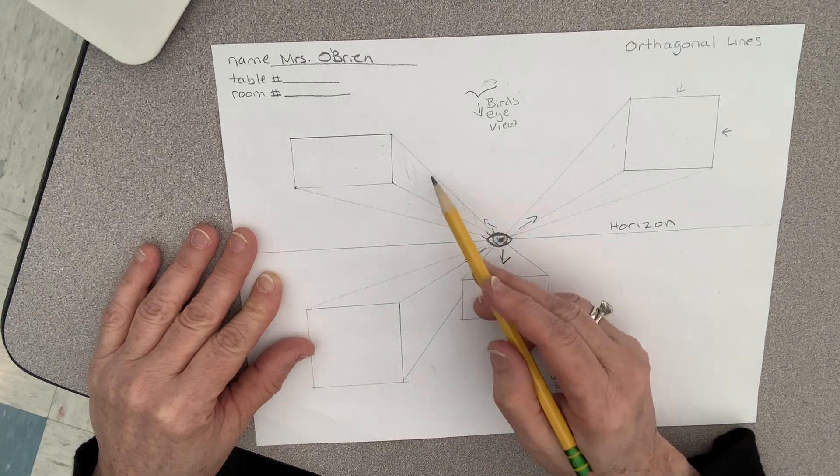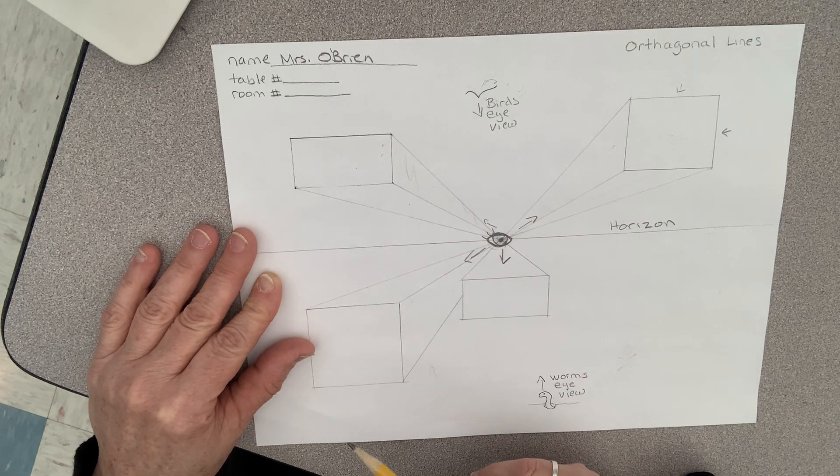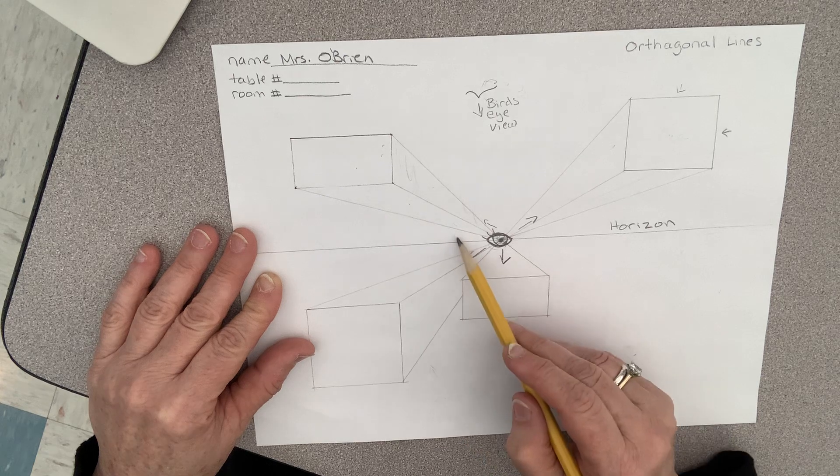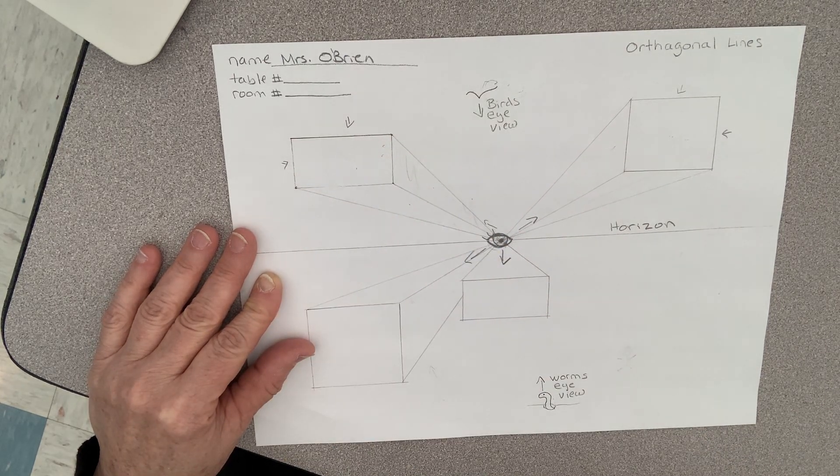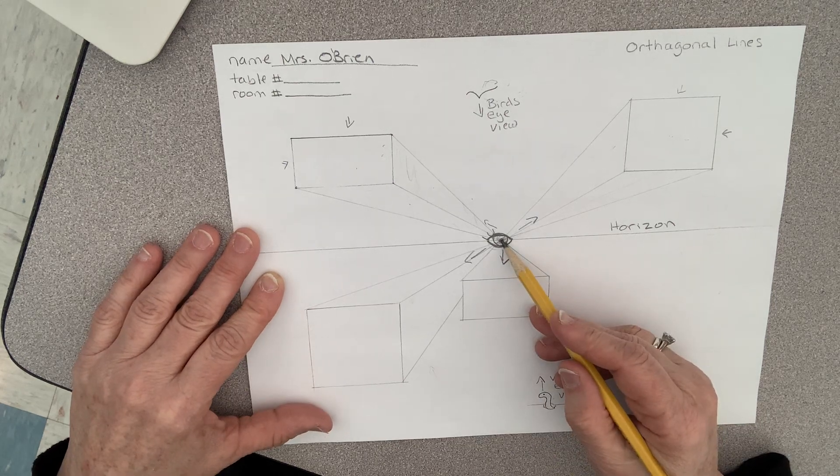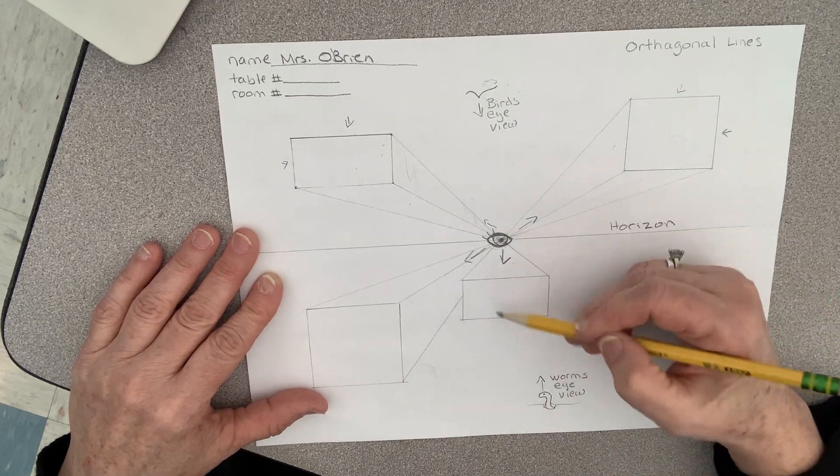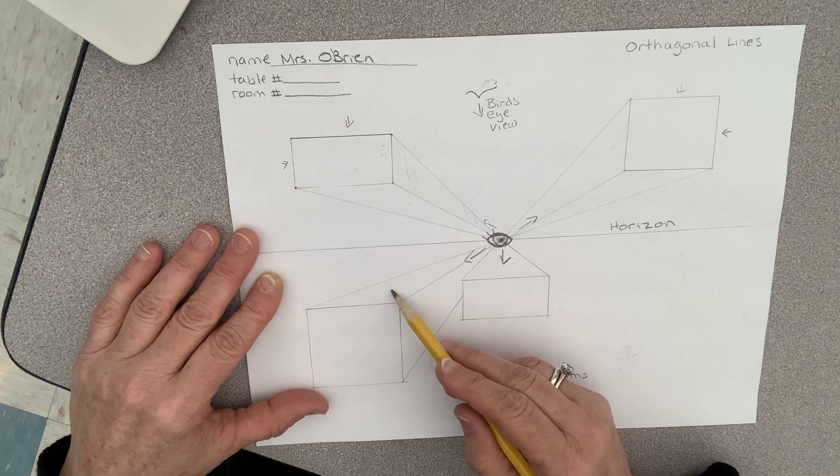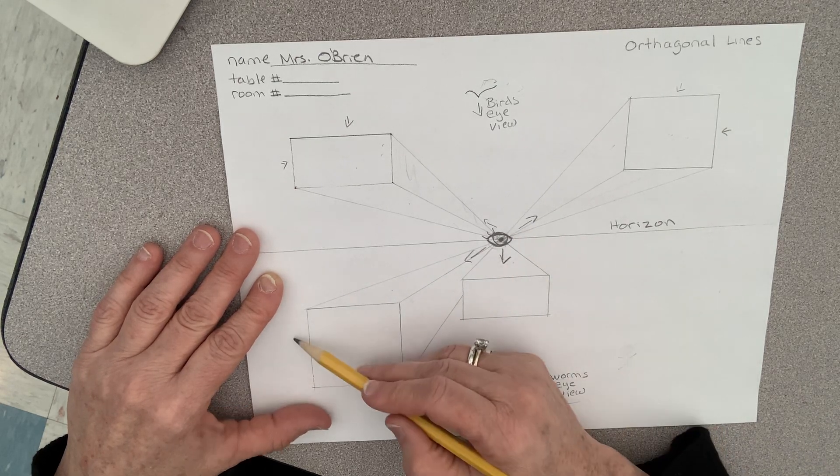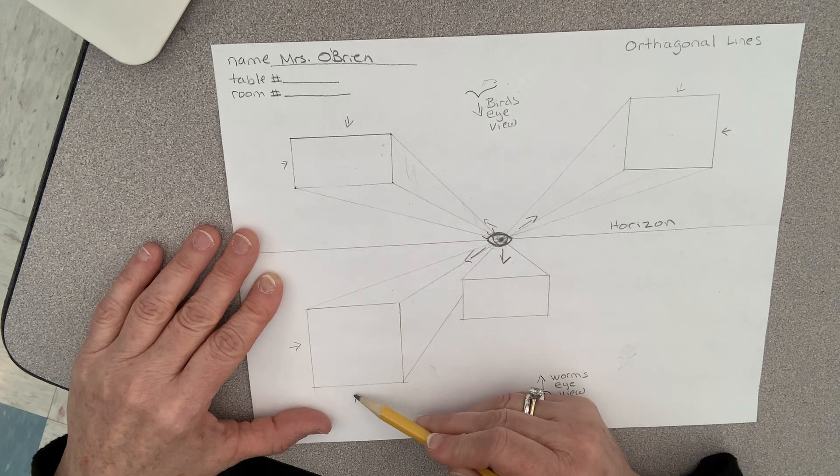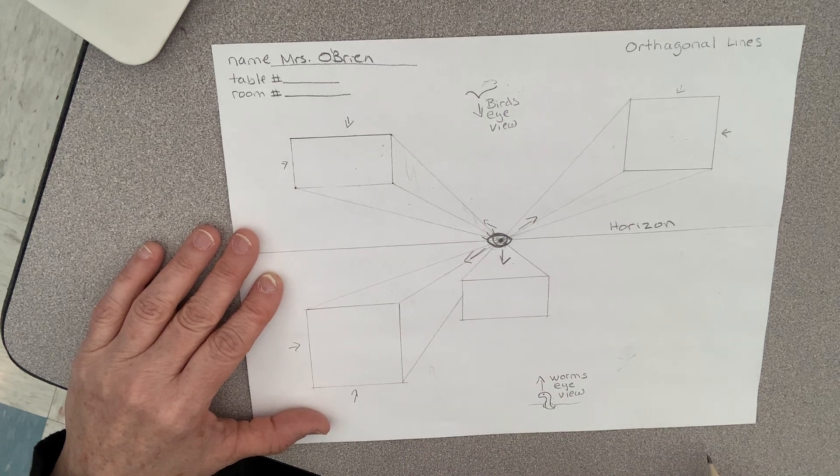And over here, if you're here, you're gonna see this side of the box and the bottom of the box, but you won't see this side or this side. Again, if you're here you're gonna see the top, not the sides. Here you'll see the top of this one and this side of this one, but you're not gonna see this side or this side.